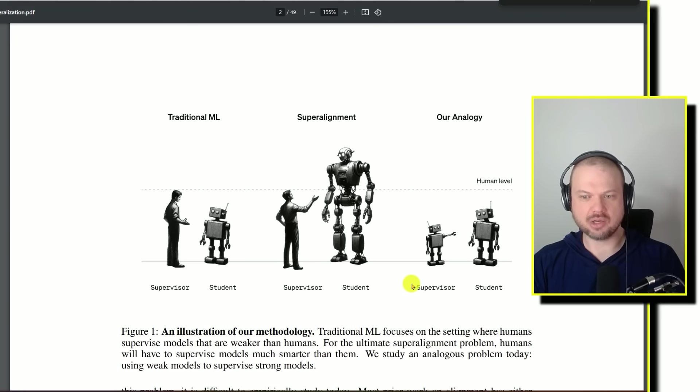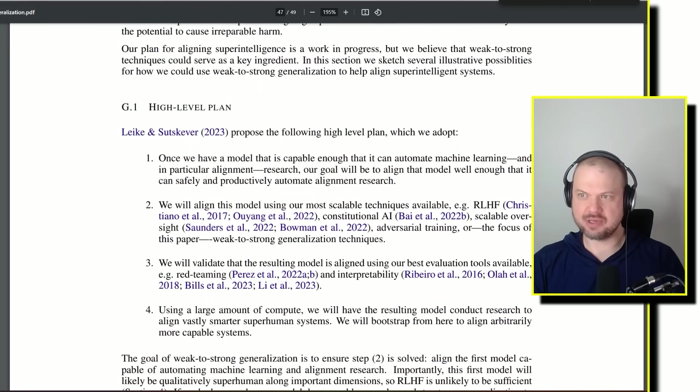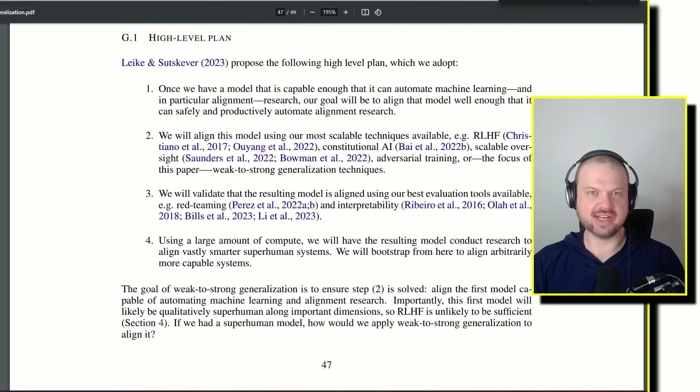And so at the end, at the very end of this paper, this is like page 47 out of 49, they have this high level plan. So Lakey and Suskever propose the following high level plan, which they've adopted. So one, once we have a model that is capable enough that can automate machine learning, like AI almost training other forms of AI, more advanced forms of itself. And so once it's able to automate that, and in particular alignment research, our goal will be to align that model well enough that it can safely and productively automate alignment research.